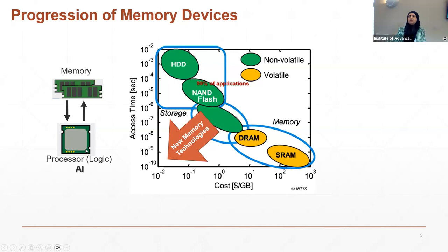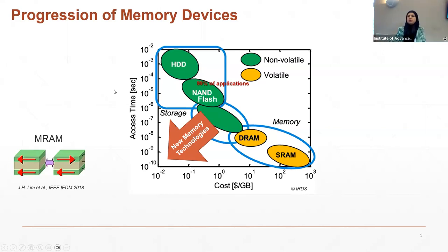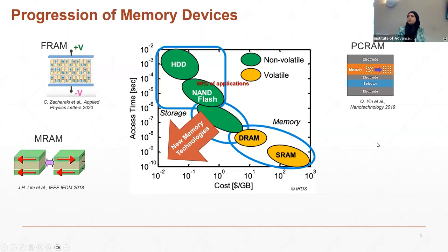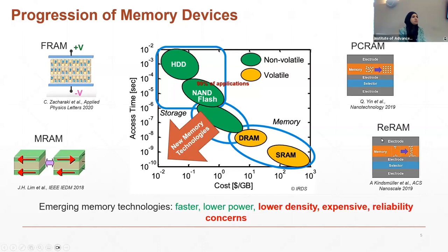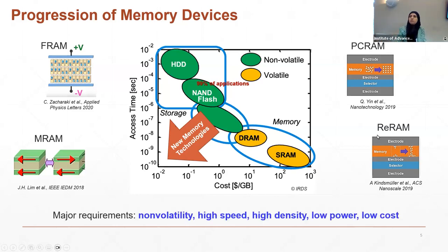Futuristic applications require combining both benefits — low cost and faster access time. For AI or autonomous cars, the processor needs to access data stored in memory in real time to make decisions — such as whether to turn left or right — to avoid catastrophe. Researchers have been developing new memory technologies using different operation mechanisms, such as magnetic RAM, ferroelectric RAM, phase change RAM, and resistive RAM. While these technologies show faster and lower-power operations compared to flash, they still have bottlenecks including lower density, exotic materials, CMOS incompatibility, reliability concerns, or high cost.